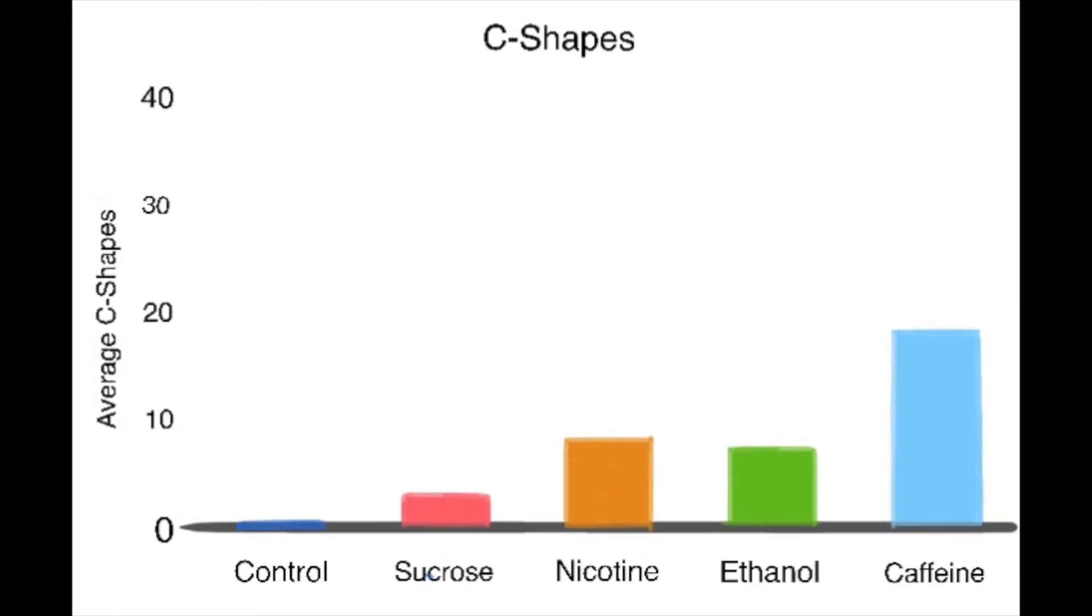Caffeine produced the most C-shapes followed by ethanol, nicotine, and sucrose. ANOVAs were run on these data and all substances produced significantly more C-shapes in relation to the control. This is in concordance with other studies as caffeine is a strong stimulant. Ethanol is also strong, so it produced high amounts early on, but is a depressant, so it tapered off.